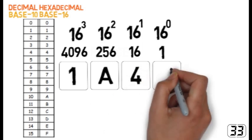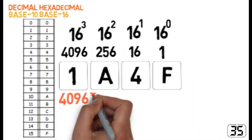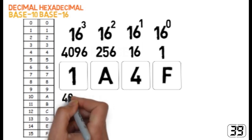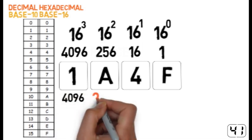Let's say we want to convert the hexadecimal number 1A4F into decimal. First of all we multiply 1 by 4096, giving us 4096.